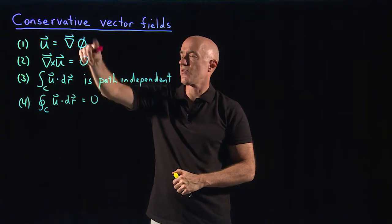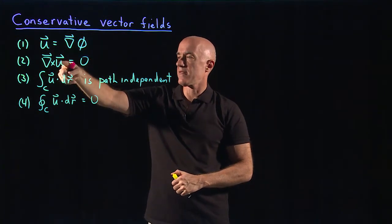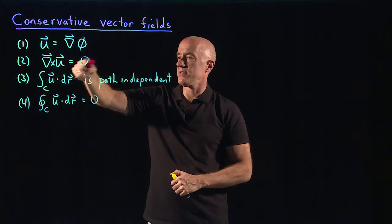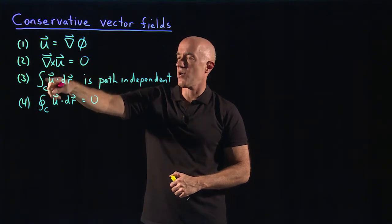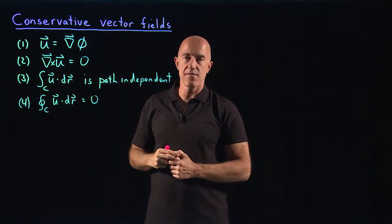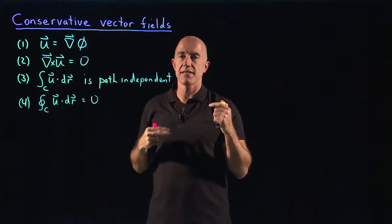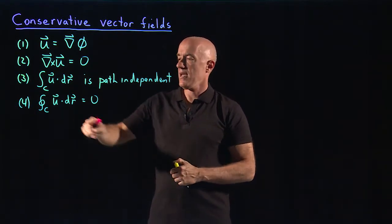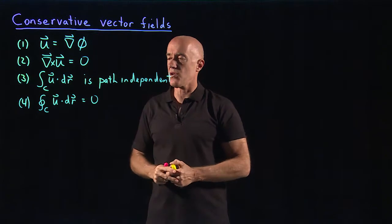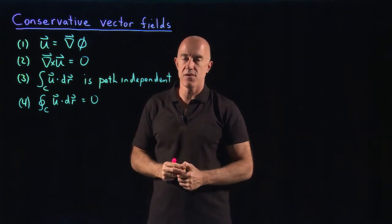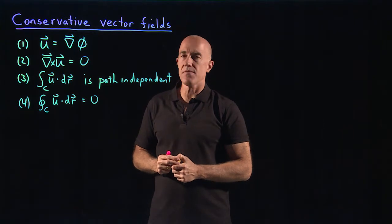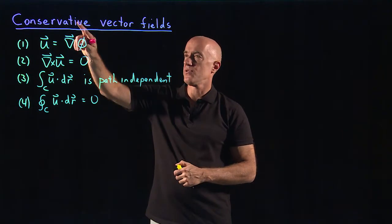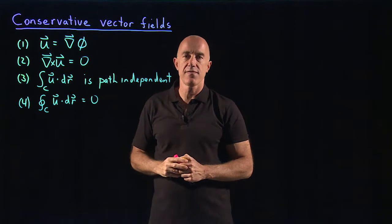Four statements of u being a conservative vector field: it's equal to the gradient of some function; the curl of that vector field is zero; the line integral of that vector field over some curve is independent of the path of the curve, as long as it has the same starting point and ending point; and the integral over a closed curve then has to be zero. Let's work a problem having to do with conservative vector fields.